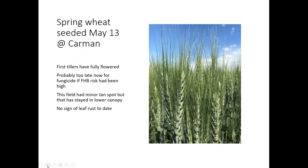This picture was taken yesterday in Carmen in a commercial spring wheat plot on the U of M farm, seeded on May 13th. That crop has completed flowering on the main heads — the anthers are out and visible — so it's probably too late for a fungicide if the Fusarium risk had been high. At the time of flowering in this field we saw only minor tan spot in the lower canopy and no sign of leaf rust, so there was no point in applying a foliar fungicide.